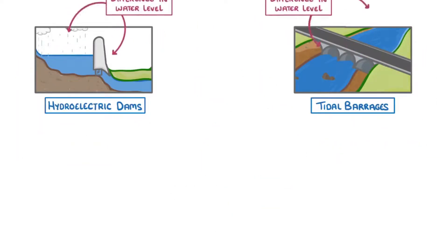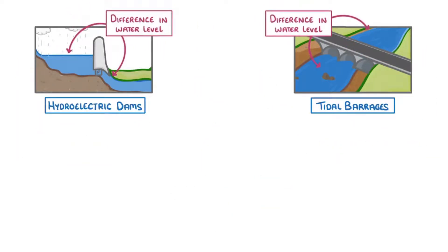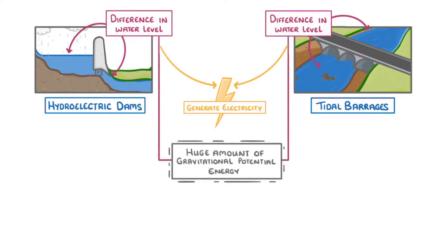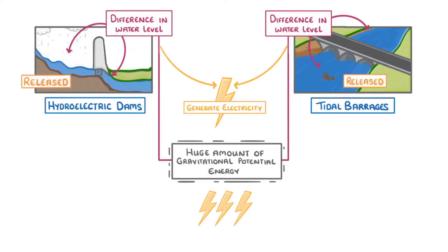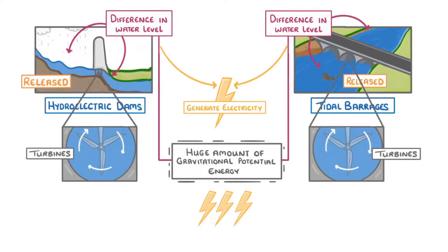In both of these cases, it's the difference in water levels that we're using to generate electricity. The difference in heights means that the stored water has a huge amount of gravitational potential energy, which we can convert into electricity. The force of the water being released from the reservoirs behind the dams spins the blades of the turbines inside the dams. These turbines are connected to generators, that generate electricity as they spin.